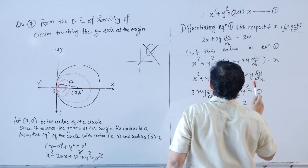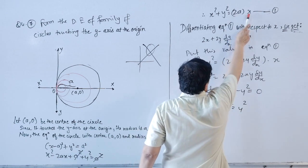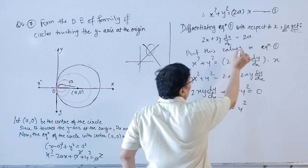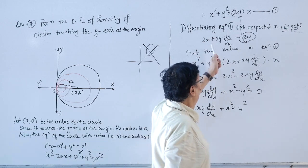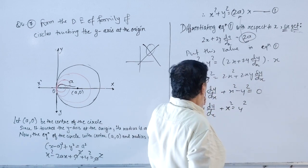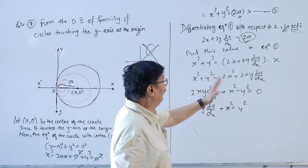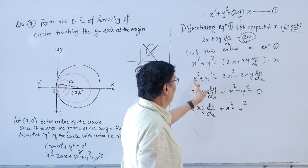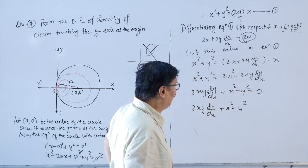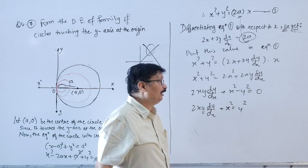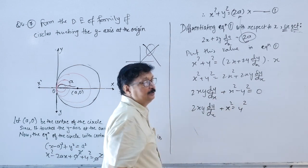Differentiating equation 1 with respect to x: 2x + 2y·(dy/dx) = 2a. Substituting 2a from equation 1 back: x² + y² = (2x + 2y·dy/dx)·x / x, giving x² + y² = 2x² + 2xy·(dy/dx)/x. Rearranging: 2xy·(dy/dx)/x + x² − y² ... and the required differential equation is 2xy·(dy/dx) + x² = y², or equivalently y² = x² + 2xy·(dy/dx).